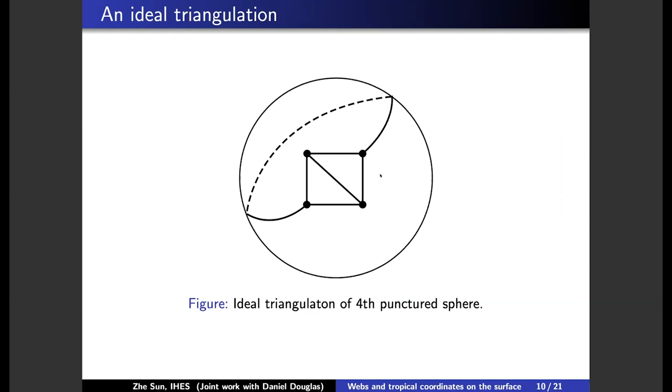And you want to draw the webs on Earth, and you can move these webs around smoothly, but you cannot cross these dots. So how many are there of these webs on Earth? How can we classify all these kinds of webs? So this is the question in your mind.